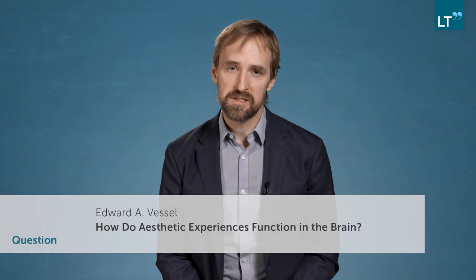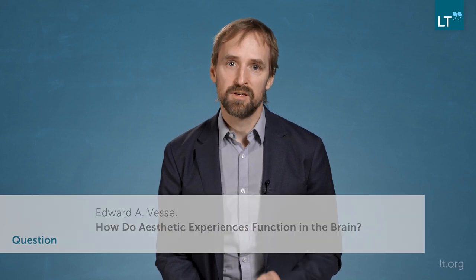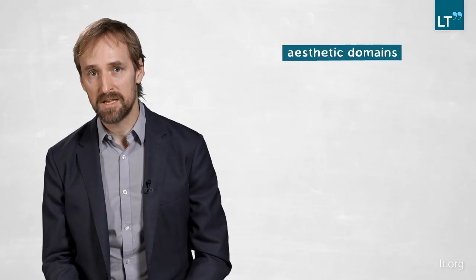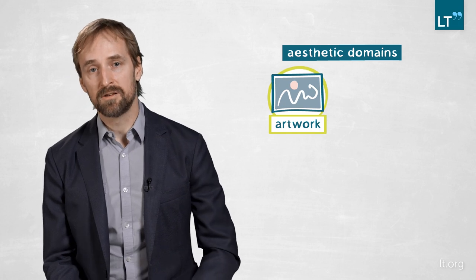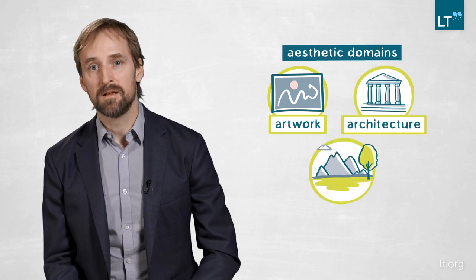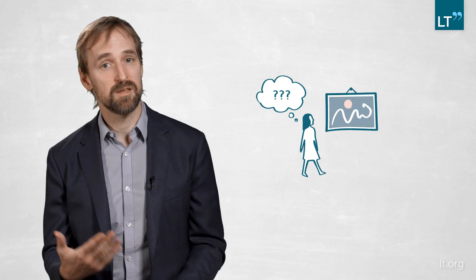The more specific question we focused on in this study is about different aesthetic domains. What I'm referring to by a domain is something where there's a set of rules that describe how you interact with that domain and how you make judgments about it. The domains we're focusing on are artwork, architecture, and natural landscapes. The types of judgments that a person makes about a natural landscape might be quite different from the types of judgments they make about artwork. And not only that, but the way that the brain represents the relevant information is also quite different.